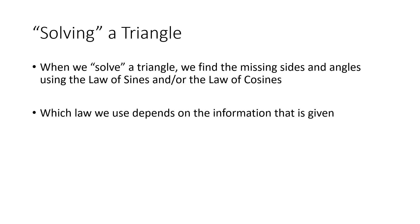I'm not going to prove these identities because the proofs involve geometric principles outside the scope of this series. Instead, we'll focus on using them. We talk about this as 'solving a triangle' — given some angles or sides, we figure out all the missing information. Which law we use depends on what we already know, and I'll work through several examples so you can see how to apply each law.